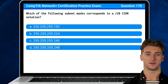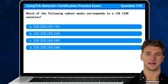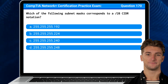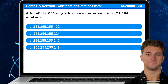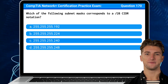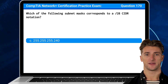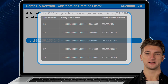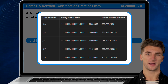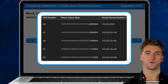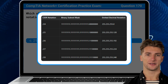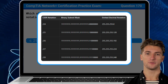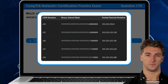Question 170. Which of the following subnet masks corresponds to a /28 CIDR notation? The answer is C: 255.255.255.240. The /28 subnet mask corresponds to 255.255.255.240, which provides 16 total IP addresses — 14 usable — with one reserved for the network address and one for the broadcast address.